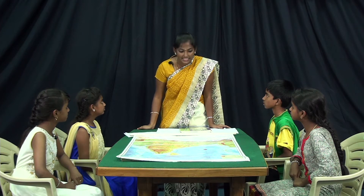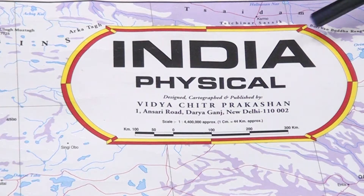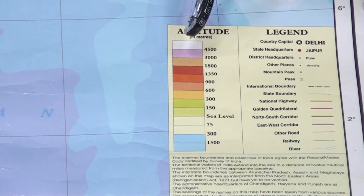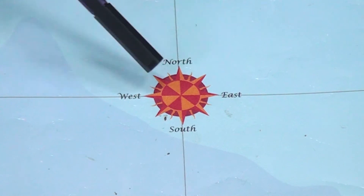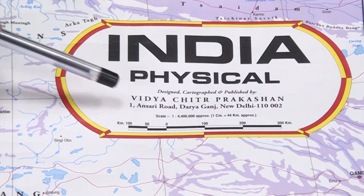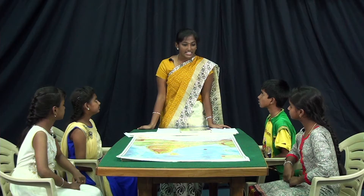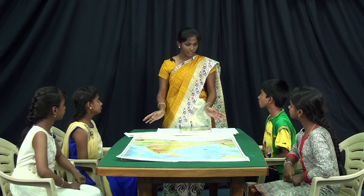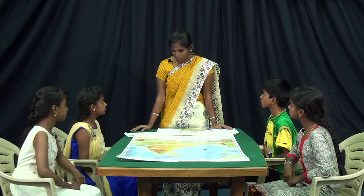Yes, Jaspreet — title of a map. Yes, Reynou — legend of colors and symbols. Good. Yes, Alice — direction indicator. Yes, Alicia — scale of a map. Good. Till now we used this map to study about the elements of a map.